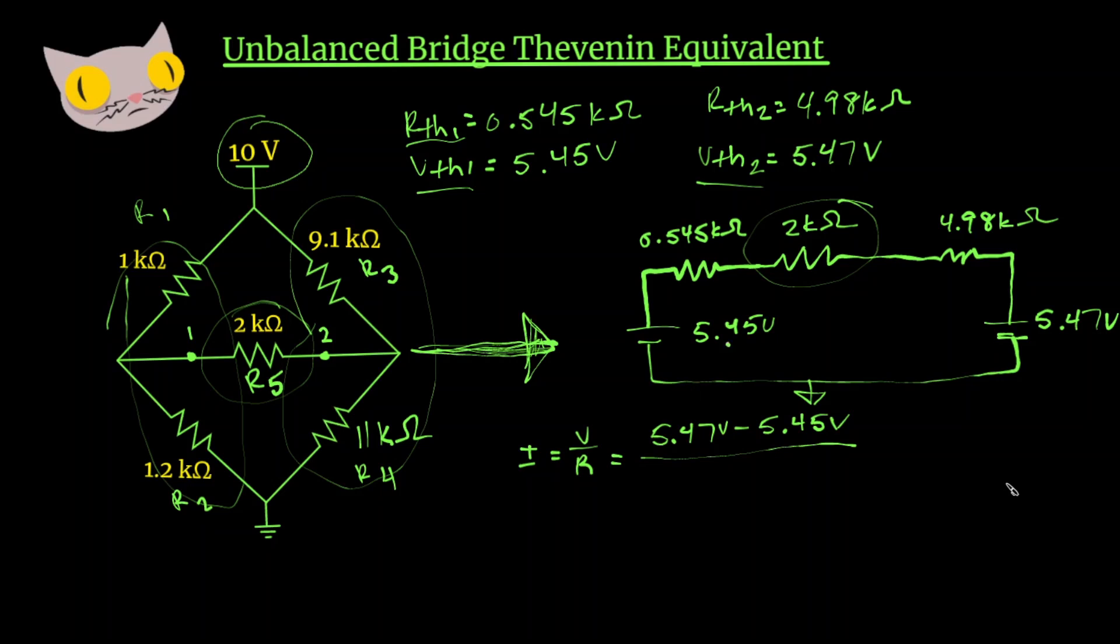And then our total resistance for the circuit. Since we have three resistors in series, all we have to do is add them up: 0.545k plus 2k plus 4.98k. And that's going to give us about 2.65 microamps.